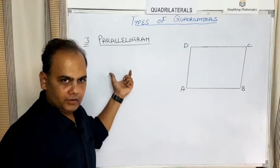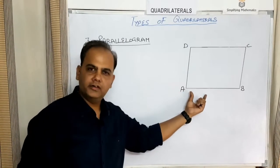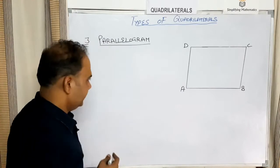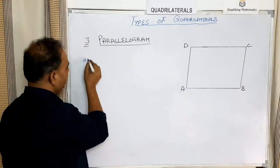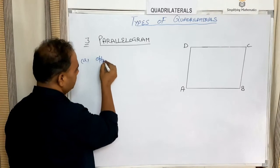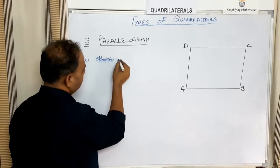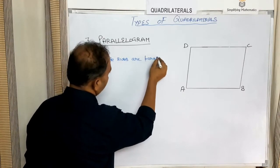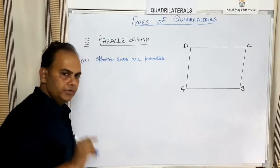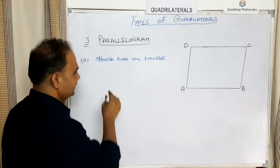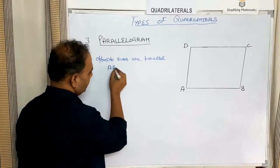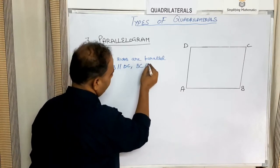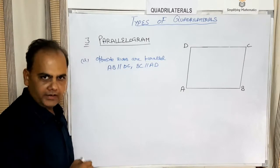The next type of quadrilateral is a parallelogram. Consider a quadrilateral ABCD. This will be a parallelogram based on certain properties. The first property is that the opposite sides of a parallelogram are parallel — AB is parallel to DC, and BC is parallel to AD.